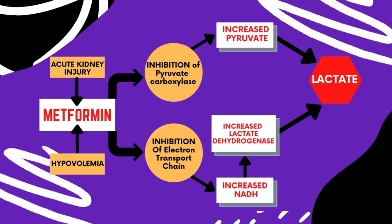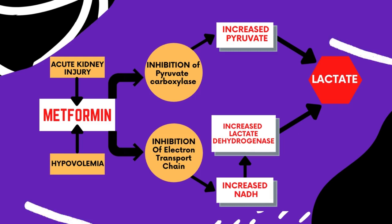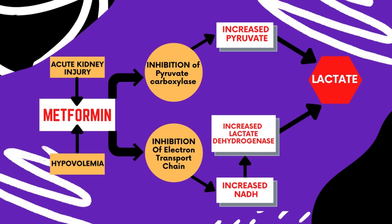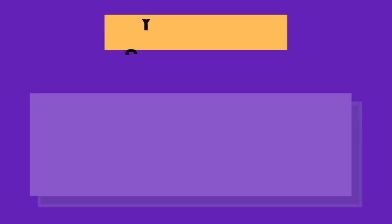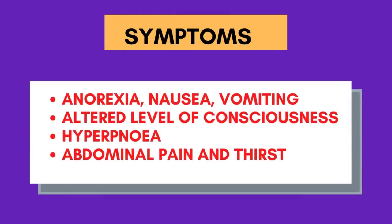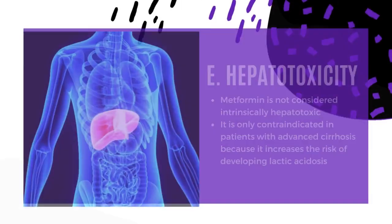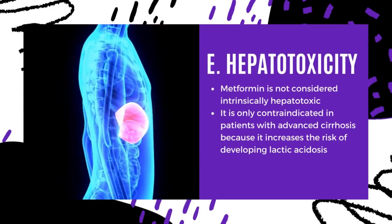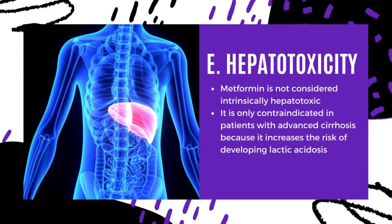Elevated metformin levels result in inhibition of enzymes involved in gluconeogenesis, reducing conversion of pyruvate to glucose and inhibiting the mitochondrial electron transport chain, resulting in increased conversion of pyruvate to lactate. Common symptoms of lactic acidosis include anorexia, nausea, vomiting, altered level of consciousness, hyperpnea, abdominal pain, and thirst.